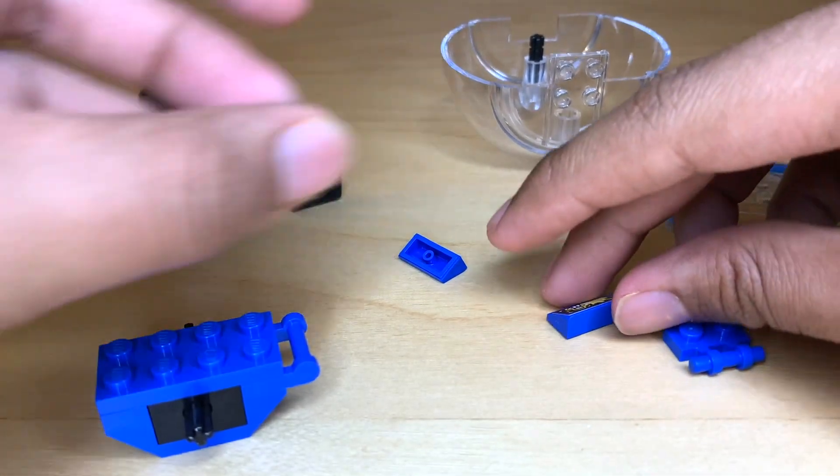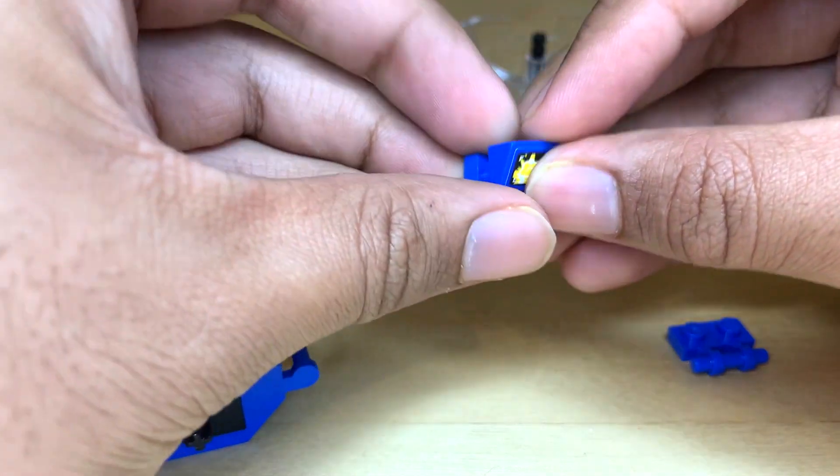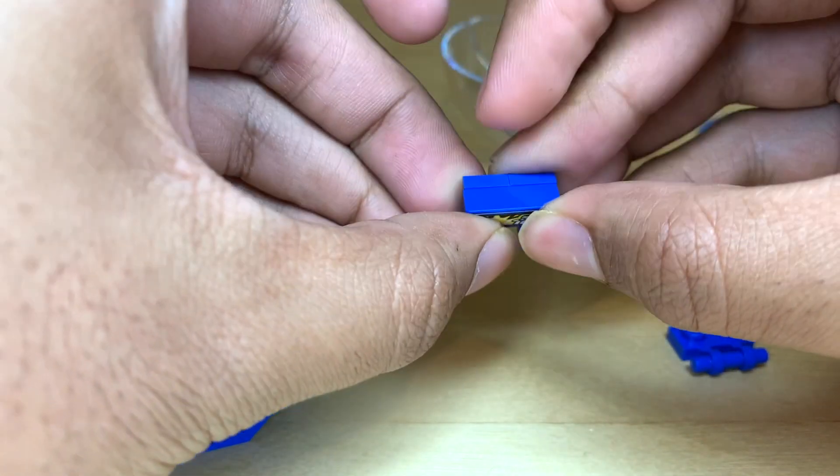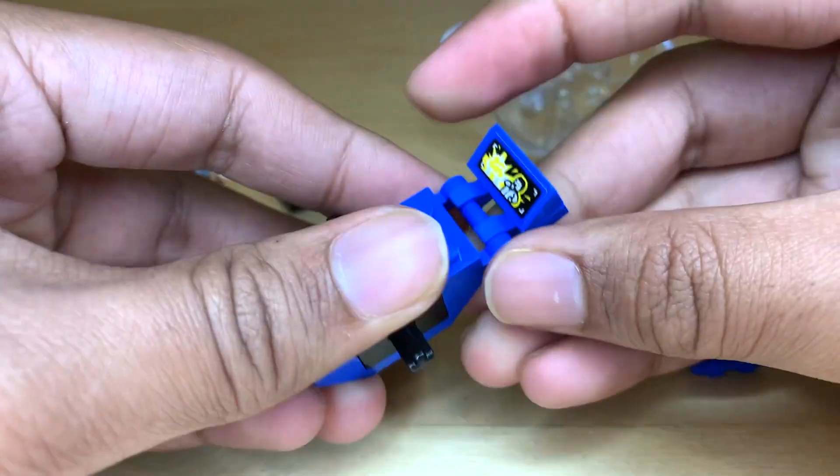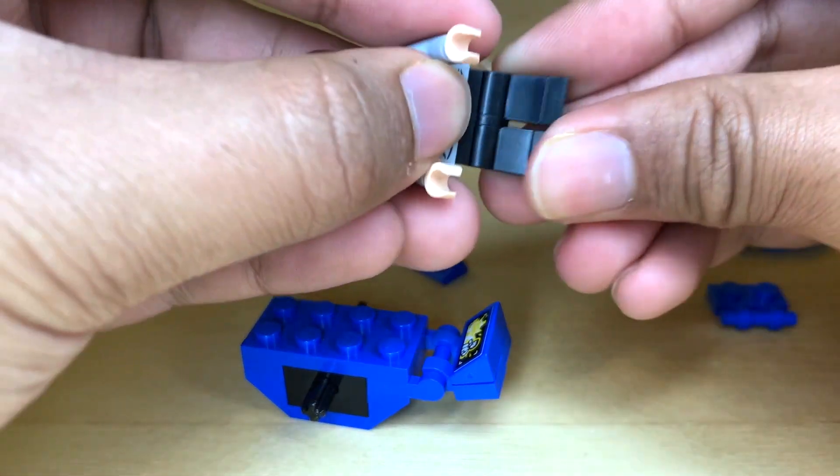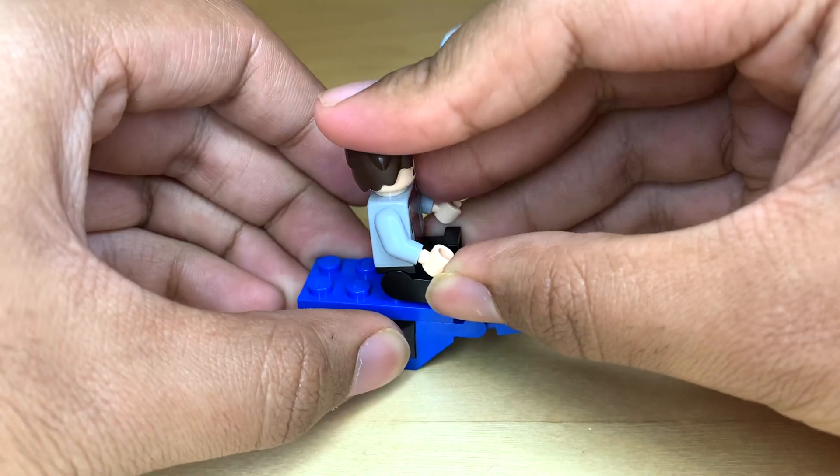So to finish this modification, we're just going to take these two 1x1s with a clip. And you could also use a 1x2 with two clips if you have that in your collection. And then you just clip that onto the front, and then we're ready to put our minifigures back into the gyrosphere.